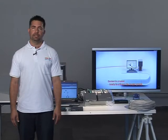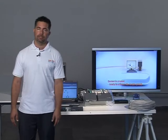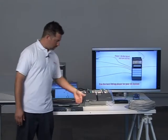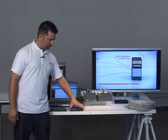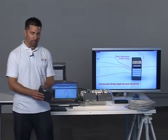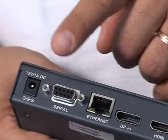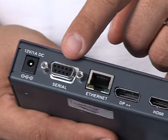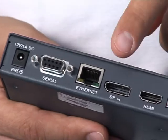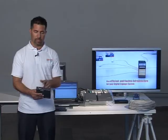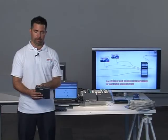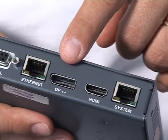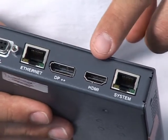I'll explain the different connections to the transmitter and receiver. This is the transmitter. We have power connected to the transmitter, a serial cable coming from the player, an Ethernet cable enabling IP connection and management, and DisplayPort or HDMI coming from the player.